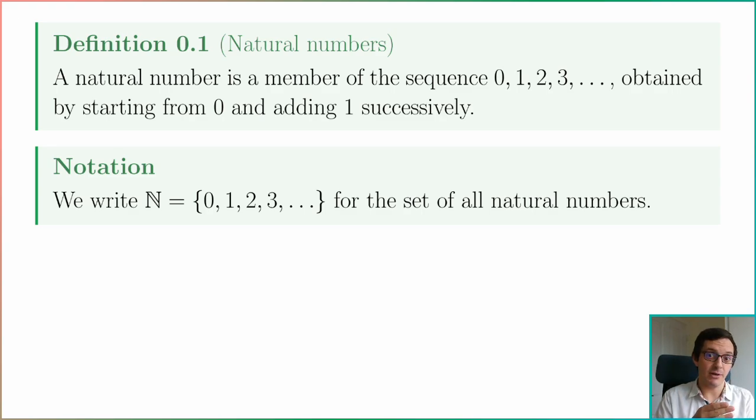By which I mean 0 is a natural number and then every natural number has a successor: 1, 2, 3 and so on. So by adding 1 successively you get all of the natural numbers. That's my definition.